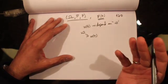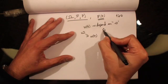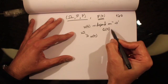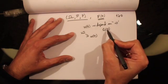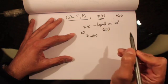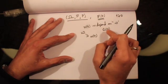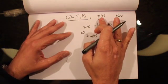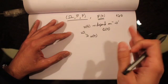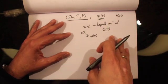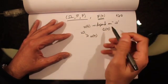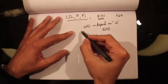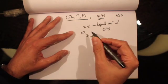Let's also define another adapted stochastic process given by delta(t). This delta(t) is an adapted stochastic process, which means it is ft-measurable. The value of this process can depend on the information available at time t, but it cannot depend on information beyond time t. That is what we mean by the process being adapted.